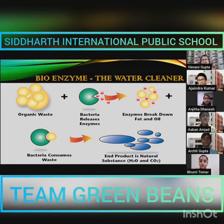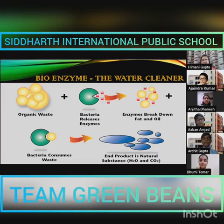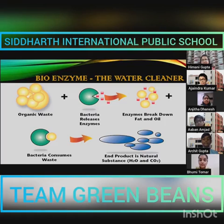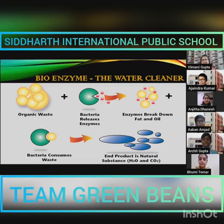Now let's learn how to make this biodegradable, eco-friendly natural cleaner with the help of bioenzymes. Firstly, take an airtight container — don't forget to mark the date of preparation. For three parts of fresh fruit peel, add one part of jaggery and ten parts of water. Keep it in a tidy spot for a few days; open it at least once a day and stir it. You will notice a biofilm forming on top, which means the enzymes are doing their job. After 90 days, drain the liquid and store it in a bottle in a dry, tidy place. The product is now ready for use.